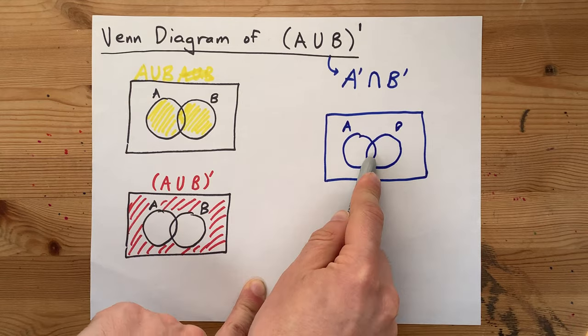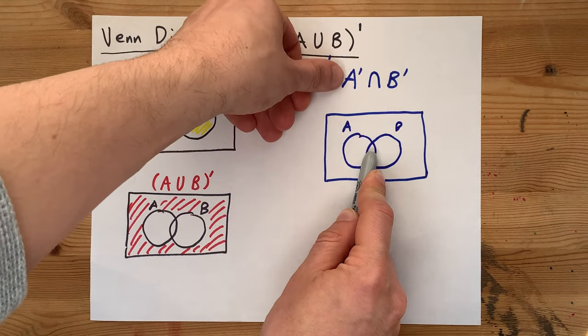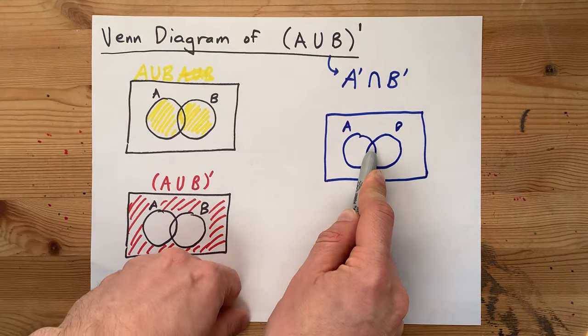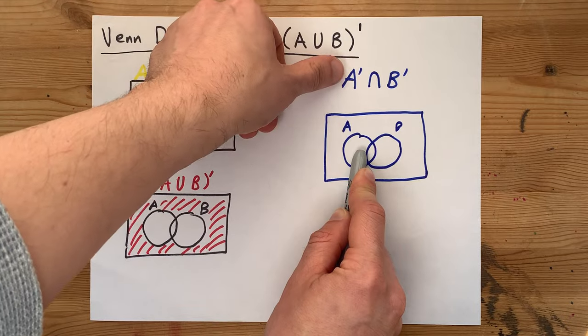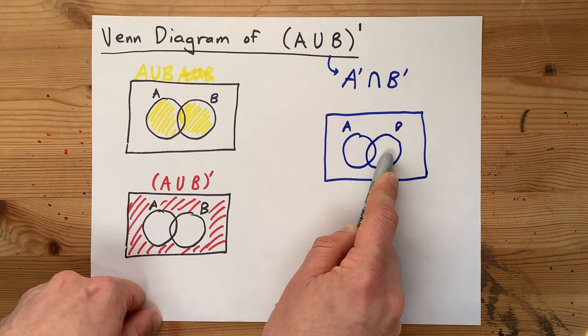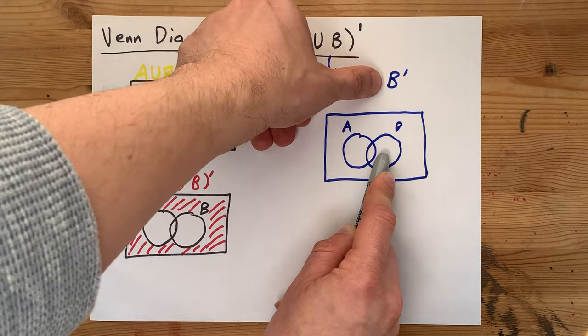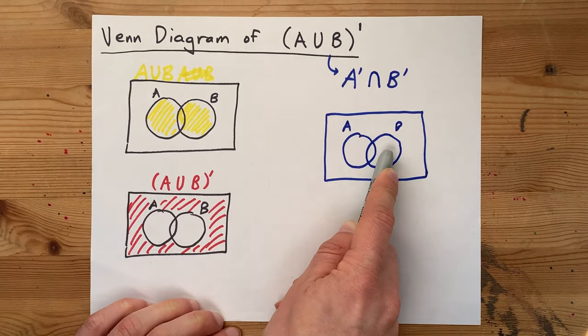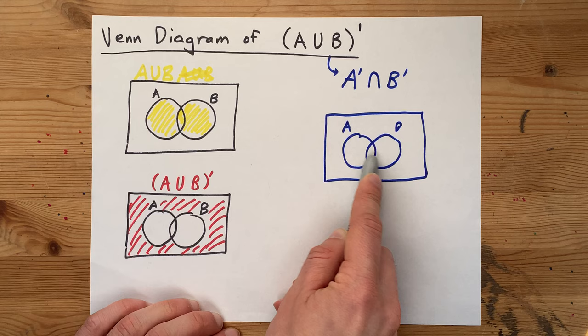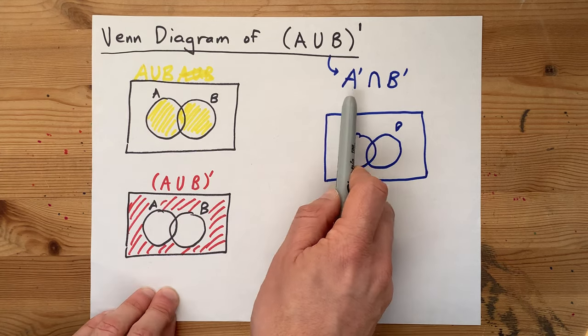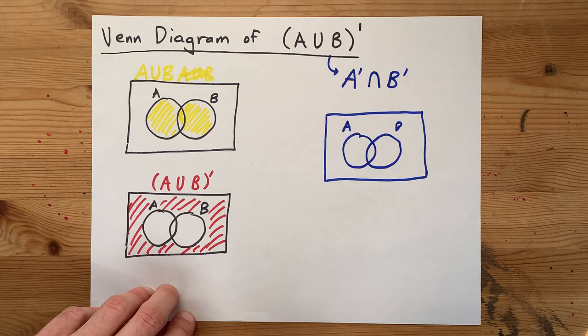So, this section in the middle is A, and so it does not count for not A. This is A, so it does not count for not A. And this is B, so it does not count for not B. All three of these sections violate the rules of it can't be in A and it can't be in B.